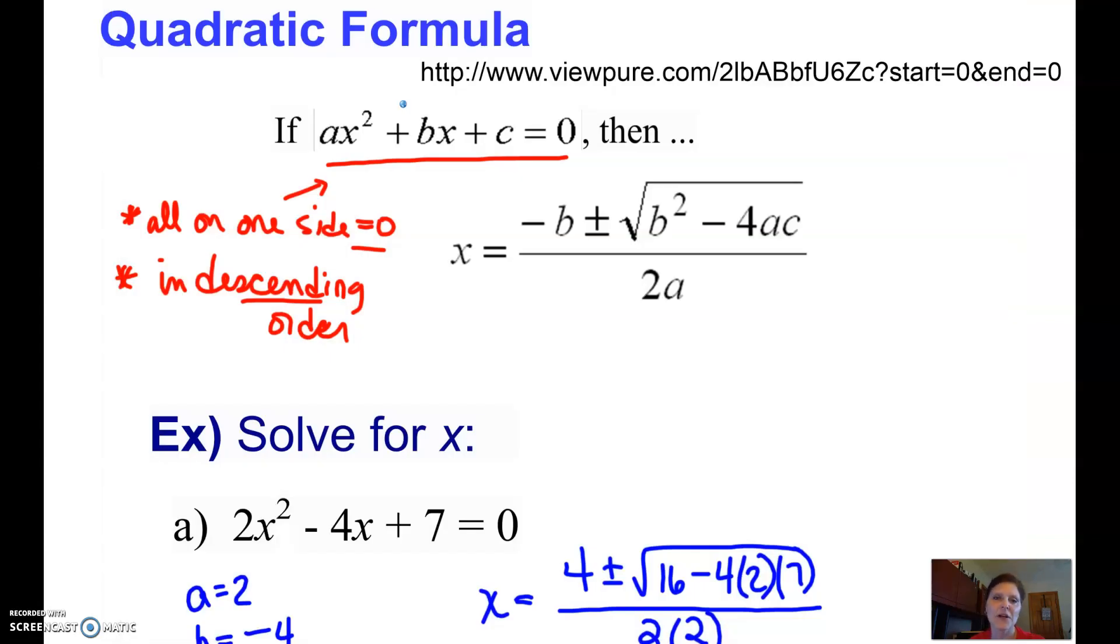A fun little song. The point is, if we're going to use the quadratic formula, we do have to have things all on one side equal to 0, and we have to have things in order so we can figure out what the A, the B, and the C are.